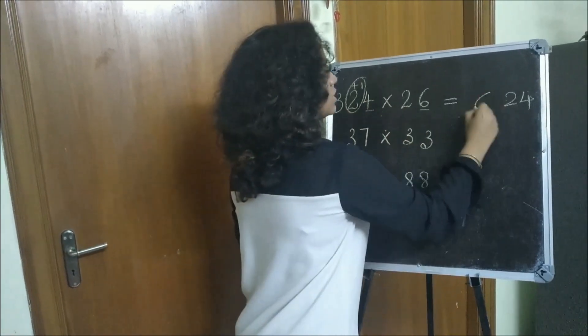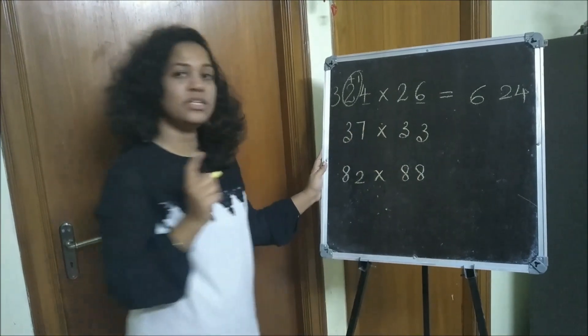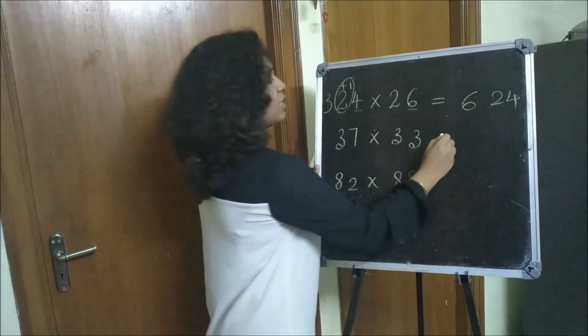2 threes are 6, so your answer will be 624. So what will be your answer here? 624.